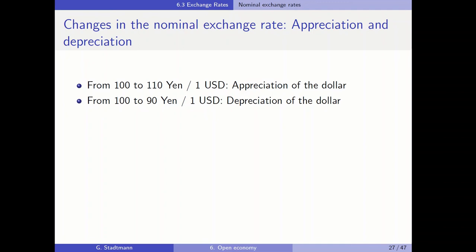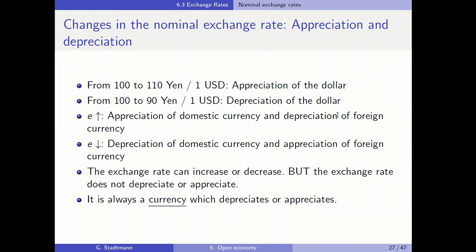In case that the exchange rate decreases from 100 to 90 yen for 1 US dollar, we call it a depreciation of the dollar. Since an exchange rate is the relative price of two currencies, an appreciation of the dollar also implies that the yen depreciates. So an appreciation of the dollar is also a depreciation of the yen, and a depreciation of the dollar is also an appreciation of the Japanese currency. The exchange rate itself can increase or decrease, but the exchange rate does not depreciate or appreciate — it is always a currency which depreciates or appreciates.